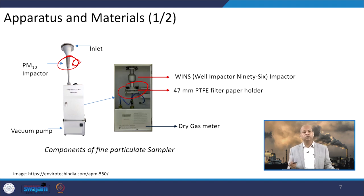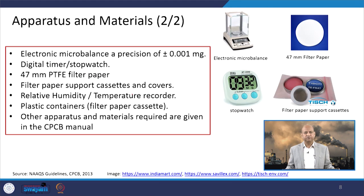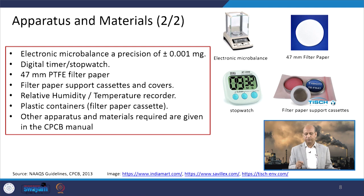If we are interested to know how many particles in the ambient air are larger than PM 2.5 but smaller than PM 10, we can also get that value. But we are especially interested in PM 2.5, so the particulate matter collected on that filter paper is of our interest. In addition to this apparatus, we need a weighing machine, an electronic micro balance, filter papers, and a stopwatch to know the sampling period and maintain the flow rate.